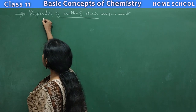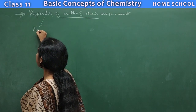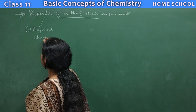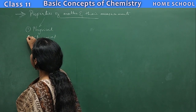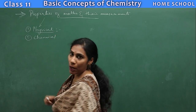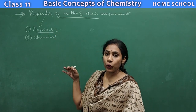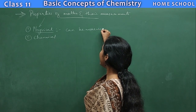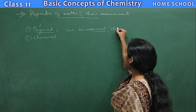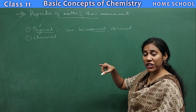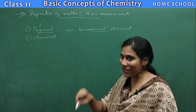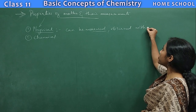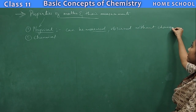The properties or characters of matter can be divided into two types: one is physical properties and the other one is chemical properties. Physical properties are those properties which can be measured — they can be easily measured and they can be observed without changing the composition of matter. This is very important to understand.